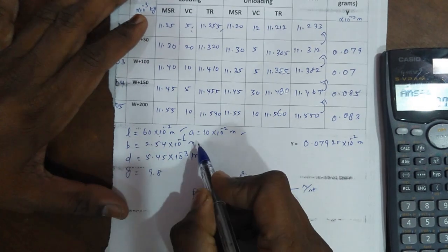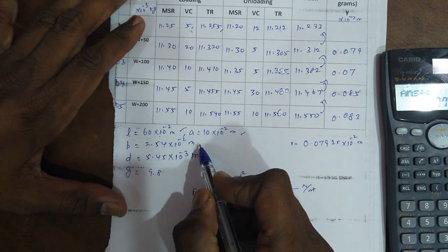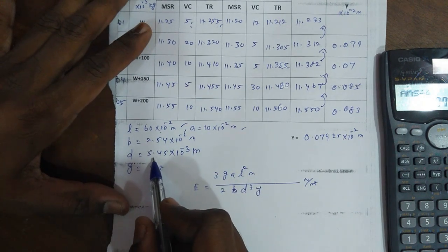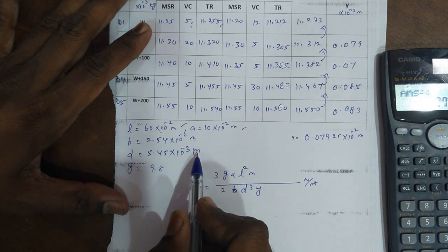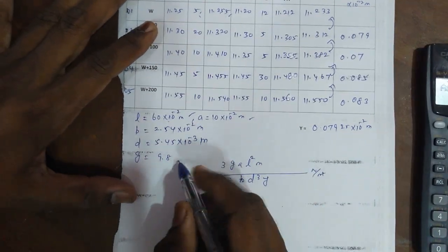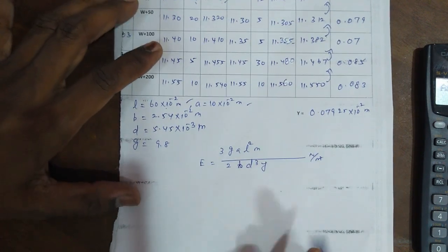Next, the breadth of the bar, from the calculations, is 2.54 times 10 to the power of minus 2 meters. Thickness of the bar is 5.45 times 10 to the power of minus 3 meters. Then gravity's value, we know that is 9.8.